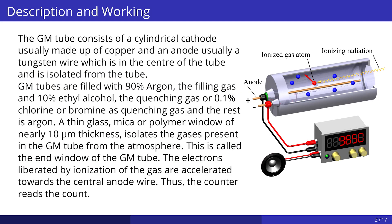The GM tube consists of a cylindrical cathode, usually made of copper, and an anode, usually a tungsten wire, which is in the center of the tube and is isolated from the tube. GM tubes are filled with 90% argon as the filling gas and 10% ethyl alcohol as the quenching gas, or 0.1% chlorine or bromine as quenching gas with the rest being argon. A thin glass, mica, or polymer window of nearly 10 micrometer thickness isolates the gases present in the GM tube from the atmosphere — this is called the end window of the tube.